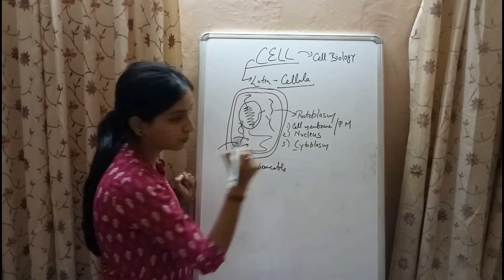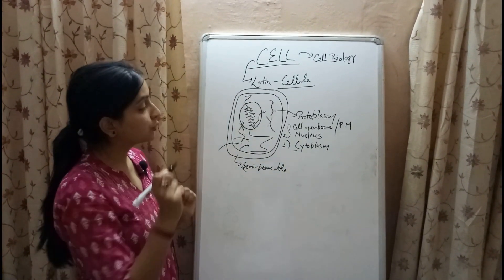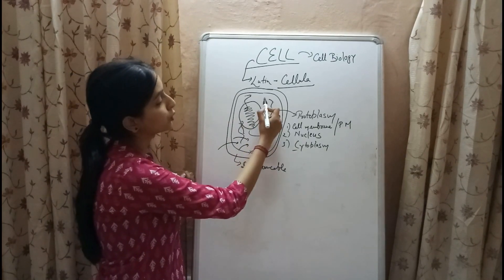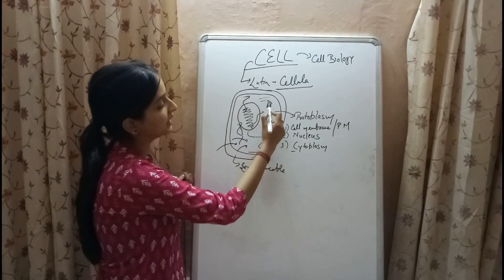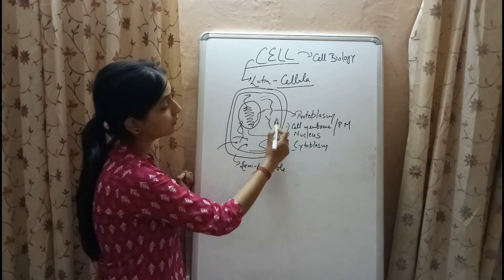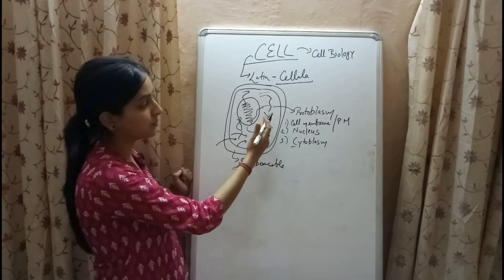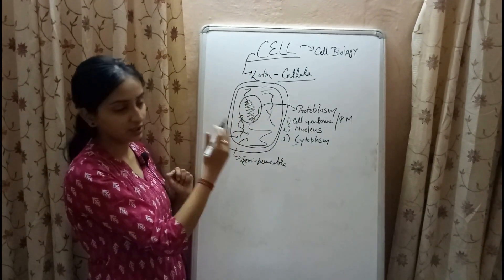The third part is cytoplasm. Cytoplasm is the protoplasmic content present within the cell membrane but outside the nucleus.